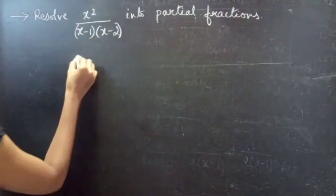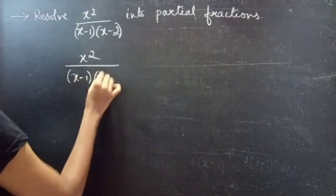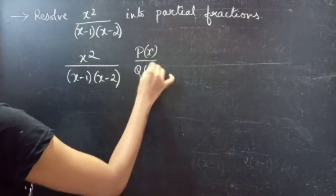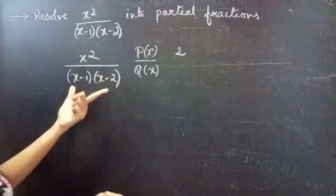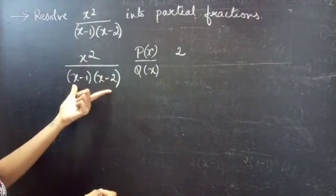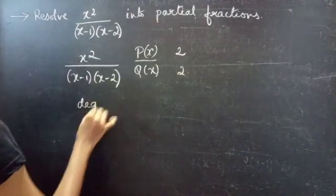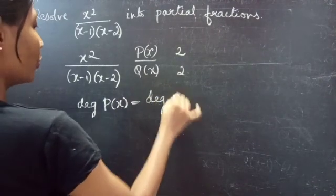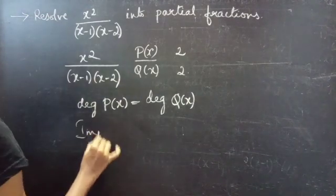Let us consider the fraction x squared by x minus 1 into x minus 2 as P of x by Q of x. The degree of P of x is 2 and the degree of Q of x is also 2. So here degree of P of x equals to degree of Q of x. From this we can say that the given fraction is an improper fraction.